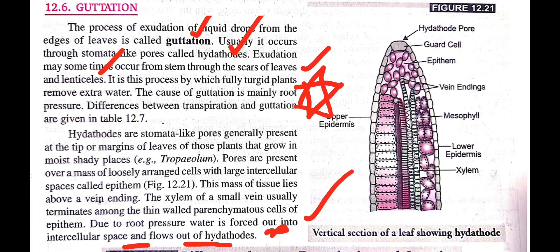The pores are present on loosely arranged cells called epithem, and this mass of tissue generally lies on the vein end. The xylem of small veins usually terminates among the thin-walled parenchymatous cells of epithem. Due to root pressure, water is forced out into the intercellular spaces of that epithem and finally flows out through the hydathodes.